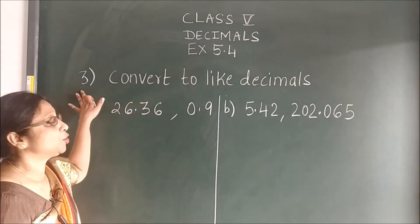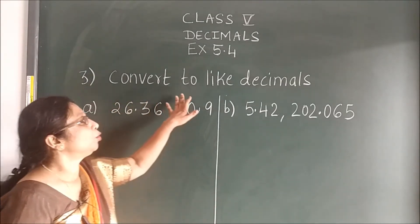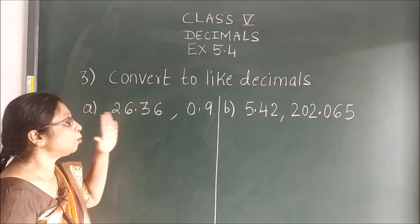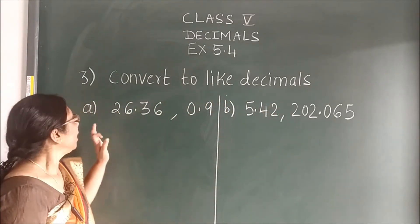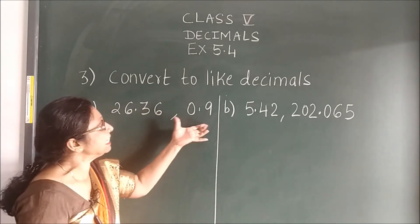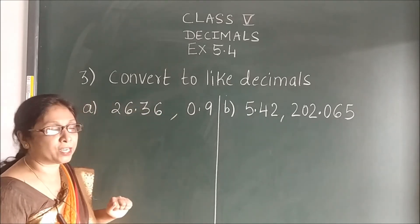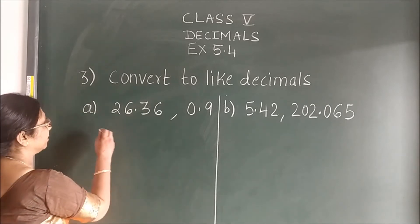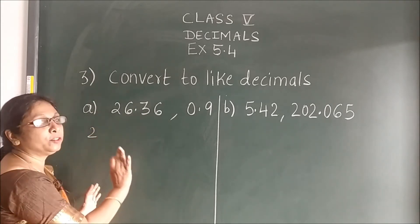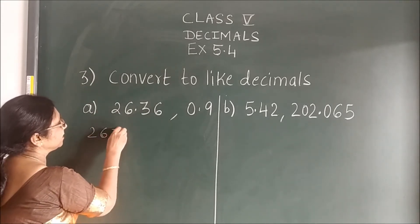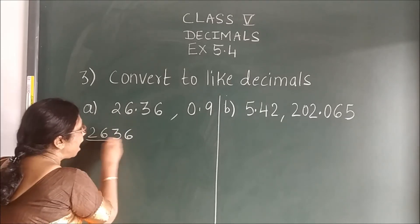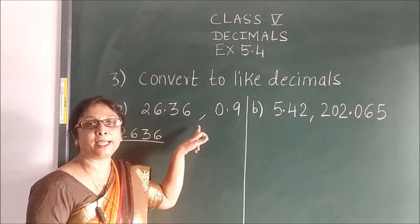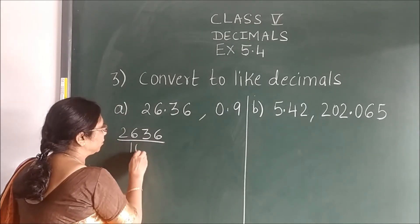In question number 3, convert to like decimals. We will see how to do the steps. This is given in unlike decimals. Now if you remove the point: 26, 36 upon. After point, how many numbers are there? 2.